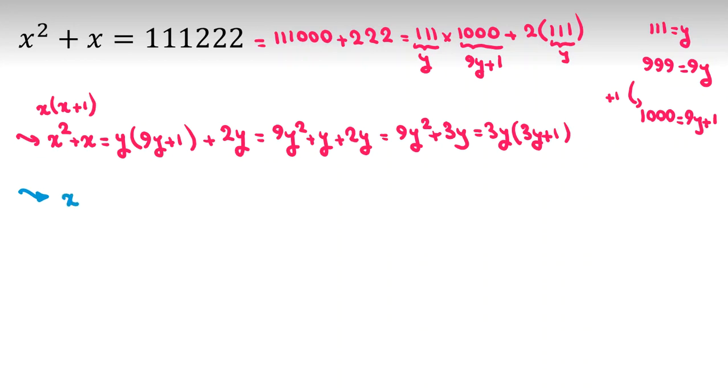Our goal is that. So I take all things to left hand side: x squared plus x minus 3y times 3y plus 1 equals 0. So I can factorize and say okay, I have x squared, then I have plus 3y plus 1, minus 3y.